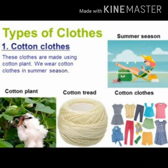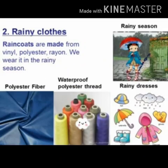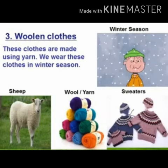Types of clothes: cotton clothes are worn in the summer season. These are made using the cotton plant. Rainy clothes are worn in the rainy season. Raincoats are made from vinyl, polyester, or rayon. Woolen clothes are worn in winter season. You wear sweaters, which are made from wool obtained from the sheep.